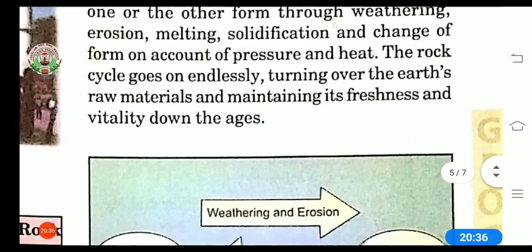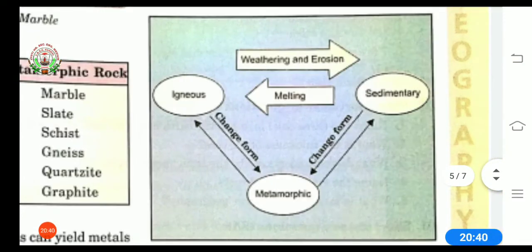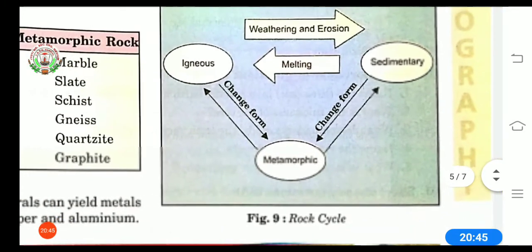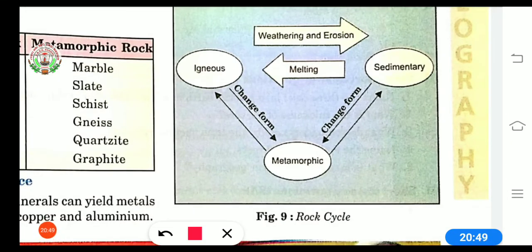Now here we are having diagram of rock cycle. With the help of this we can understand rock cycle nicely. Here we can see there are three types of rocks: igneous rocks, sedimentary rocks and third is metamorphic rocks. When these rocks are recycled, recycle means that cycle is going on here.